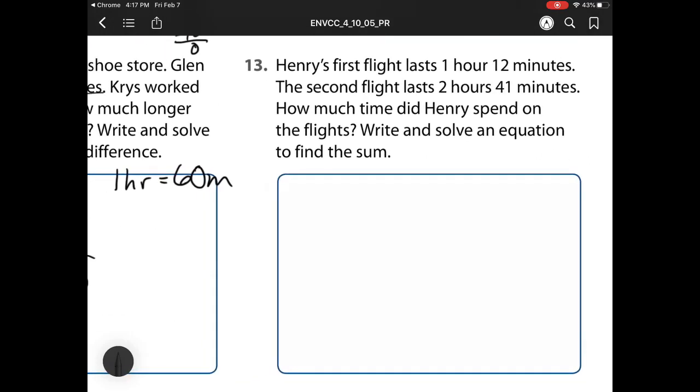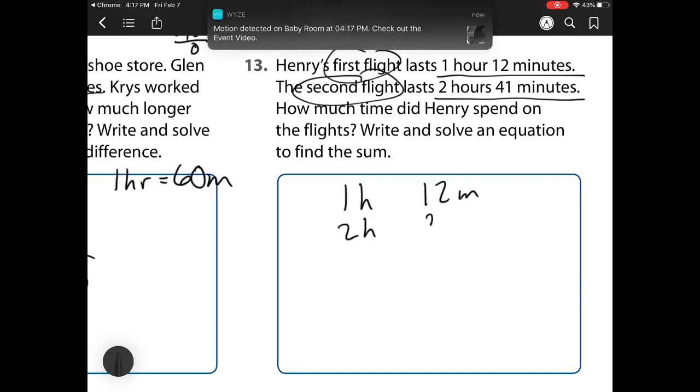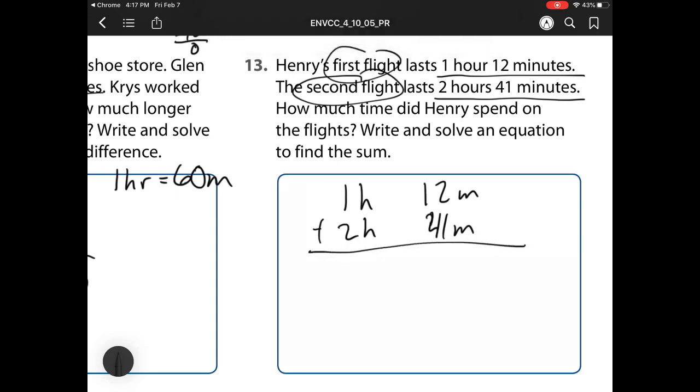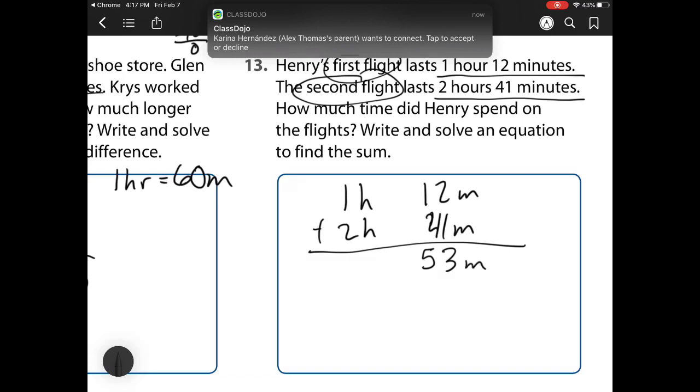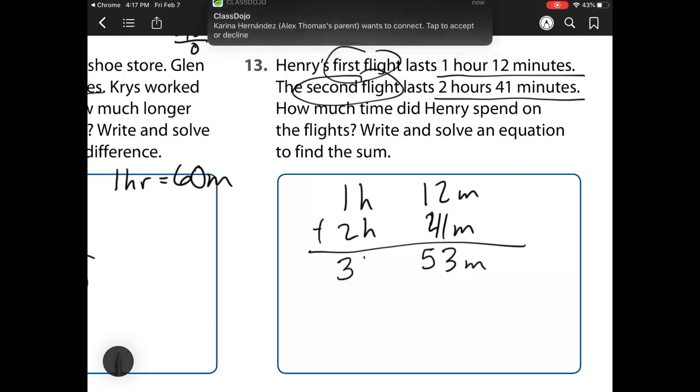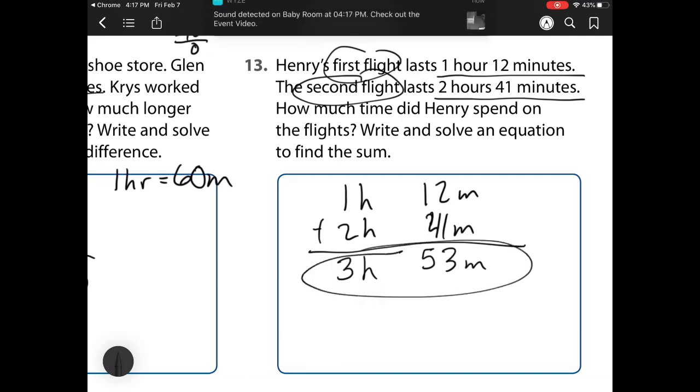For Henry's first flight, we have it last 1 hour and 12 minutes. The second flight is 2 hours and 41 minutes. How much time did Henry spend on the flights? So here we have one flight plus a second flight. So I have to add them together. I need to add 12 plus 41. 12 plus 41 is 53 minutes. And then 1 plus 2 is 3 hours. So here I have 3 hours and 53 minutes for my final answer for how much time he spent.